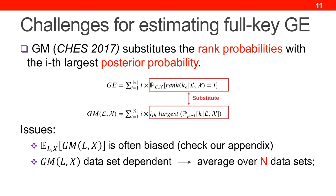Poussou et al. also introduced a very fast estimation of GE called GM in CHES 2017. GM is very fast by substituting the rank probabilities in the GE formula with the i-th largest posterior probability from one dataset. However, there are two issues with this estimator. First, such probability substitution is biased, causing GM to be a biased estimator of GE — you can check our appendix for the detailed discussion. Second, GM is dataset dependent, while theoretically GE should be independent from a specific dataset. As a result, GM needs to be averaged over multiple datasets to empirically eliminate such dependency. Due to this bias, we will not compare GM with our GEA in the multi-byte case in the experiments.